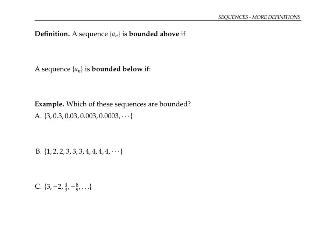A sequence is bounded above if all of its terms are less than or equal to some number. In other words, there's a number capital M such that the term a sub n is less than or equal to capital M for all values of the index n.